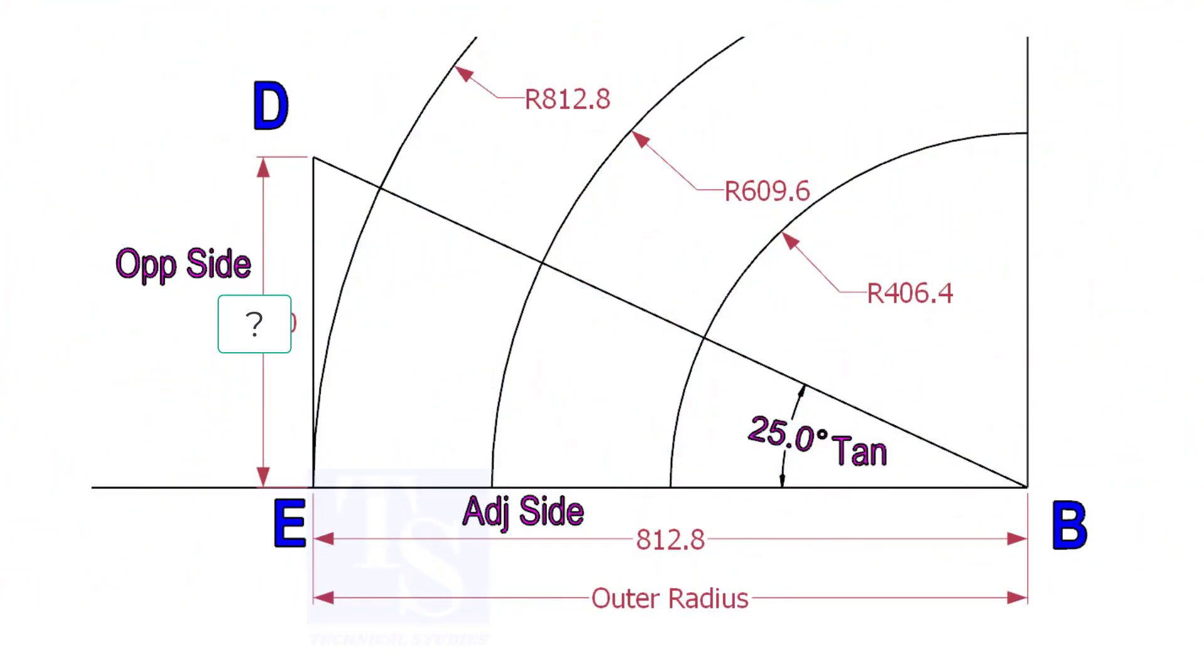Mark a line 25-degree rotated from the base line AB. To draw the line DB, we need to know the length of the line ED.